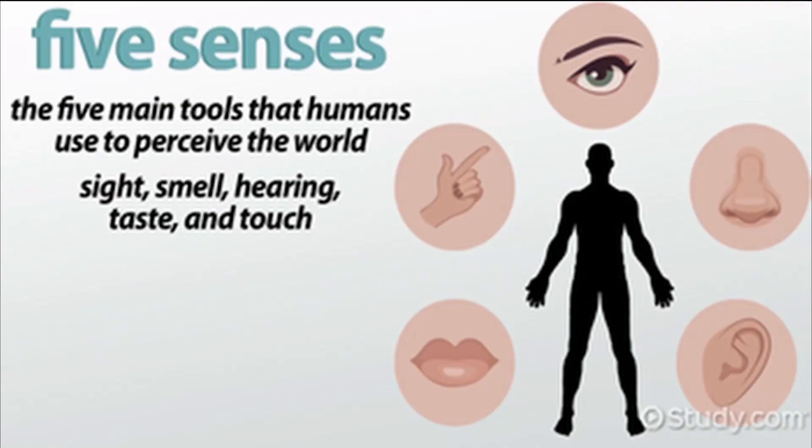According to biology, senses are how our body perceives external stimulus. Generally, we have five senses: sight, smell, touch, taste, and sound.